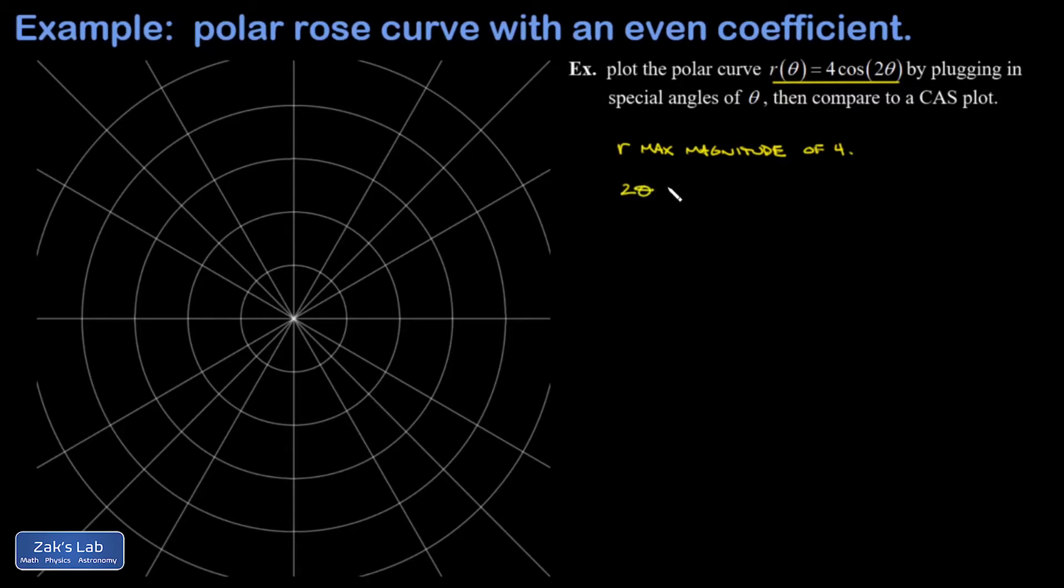So I start out by saying okay, what about when 2θ = 0? That gives me r = 4 and I've got the tip of my first petal. Now you have to have some experience with these curves before you know exactly what this means, but basically the curve is doing something like this.